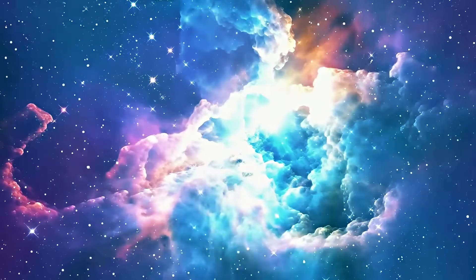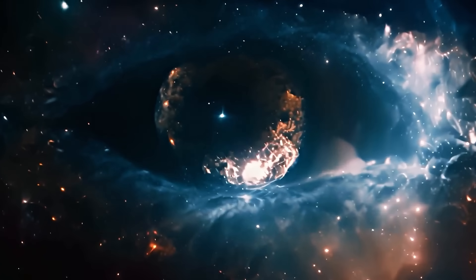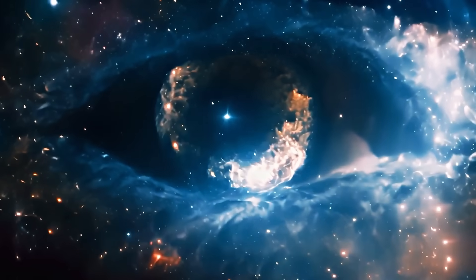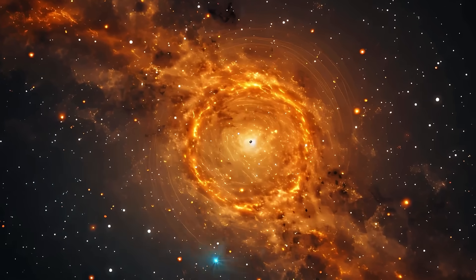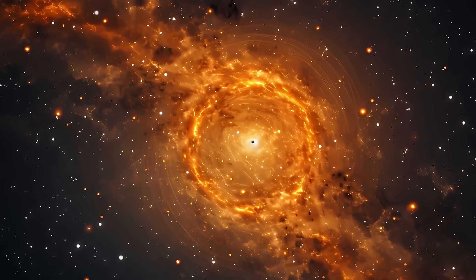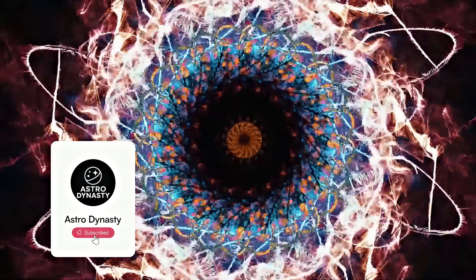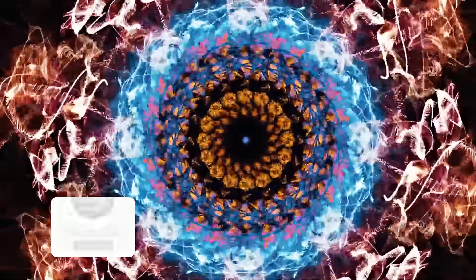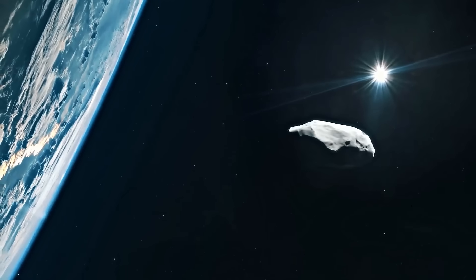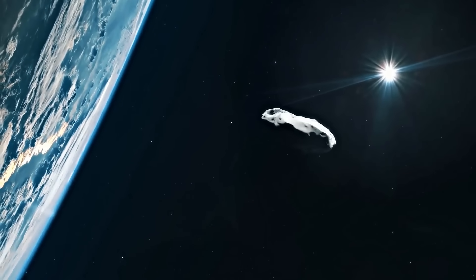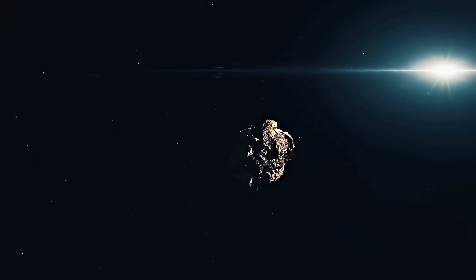When the images arrived, they confirmed what everyone feared and hoped. That bright jet toward the sun was still there. It wasn't a camera glitch. It wasn't a trick of light. It was real. And the object looked the same from every angle. A brilliant, structured light unlike any known comet.